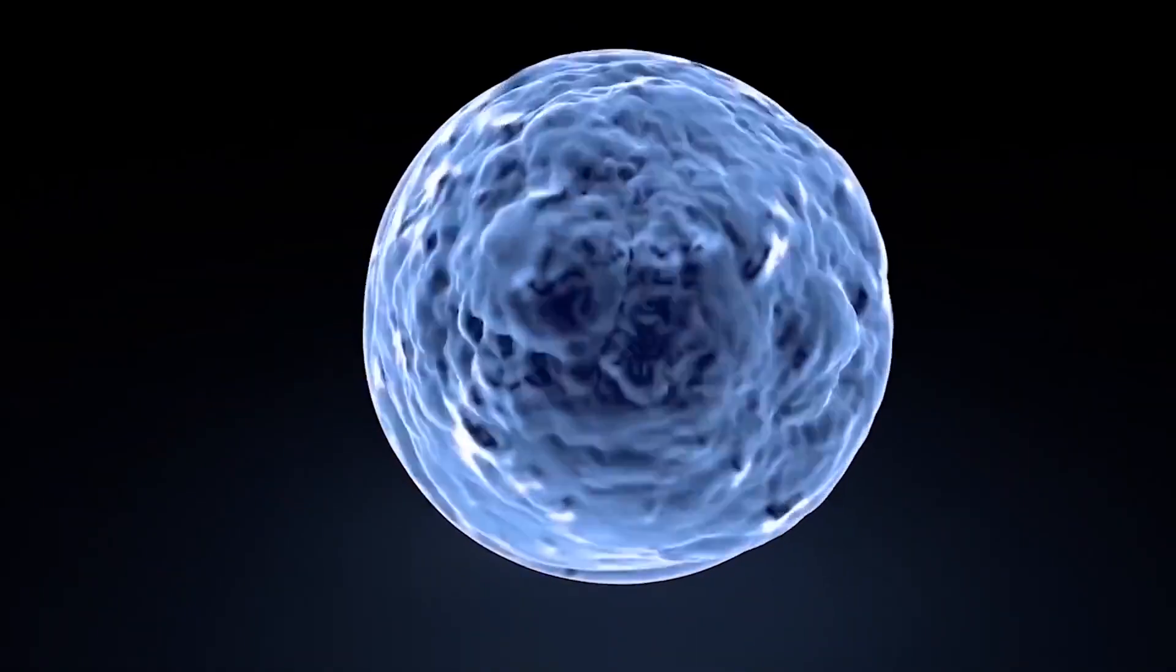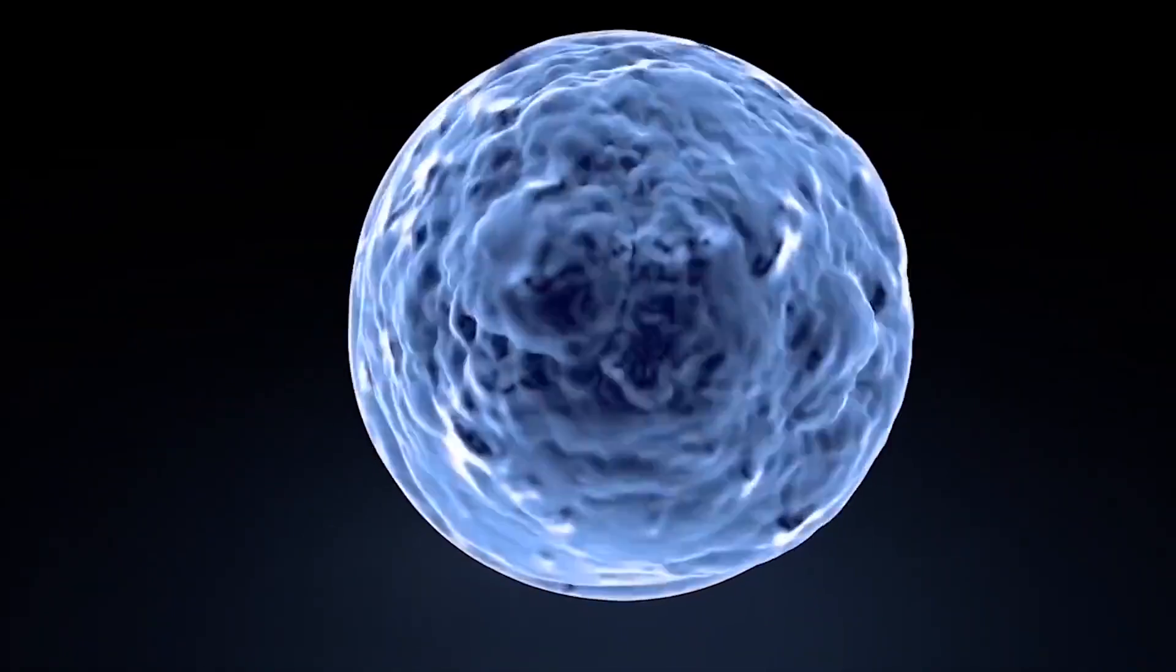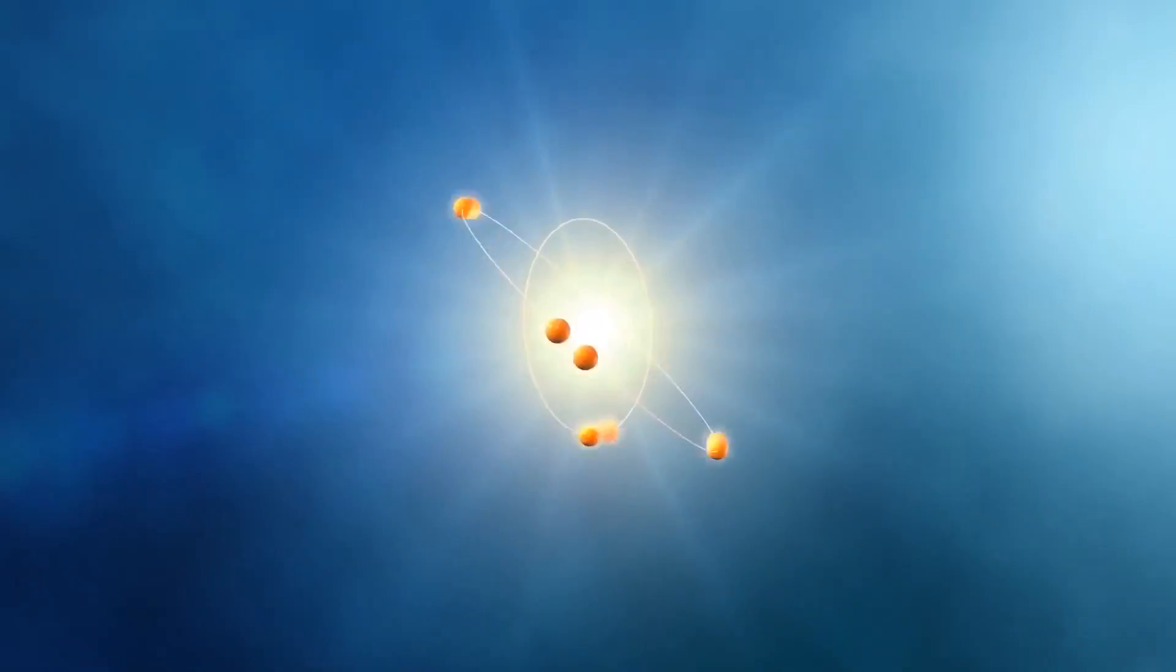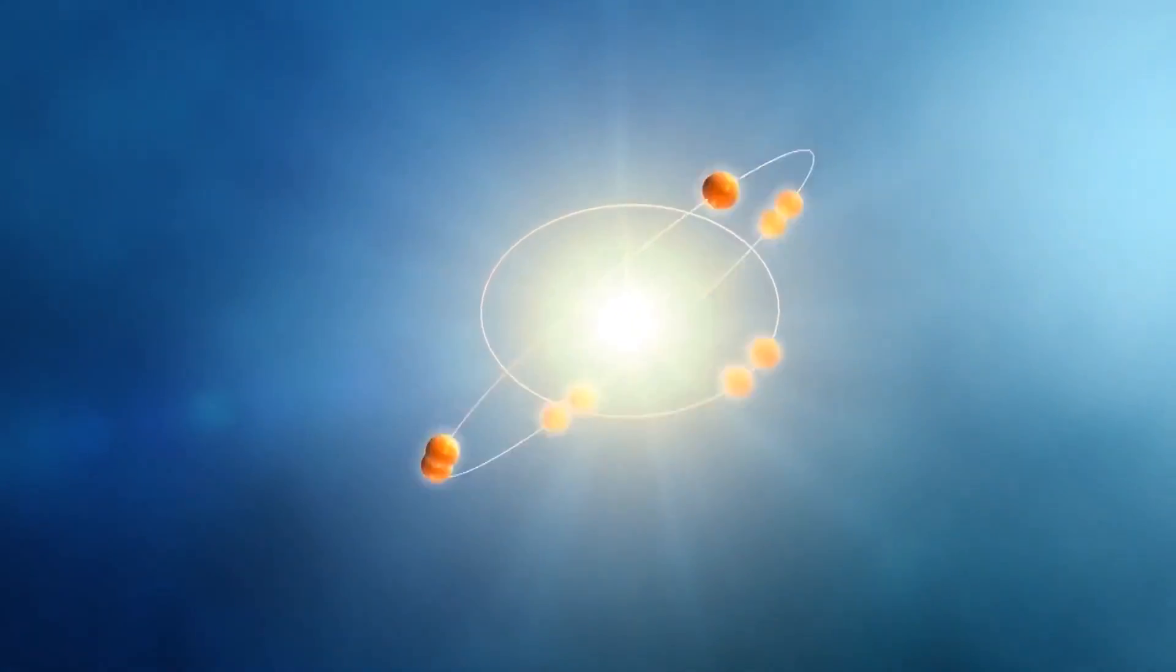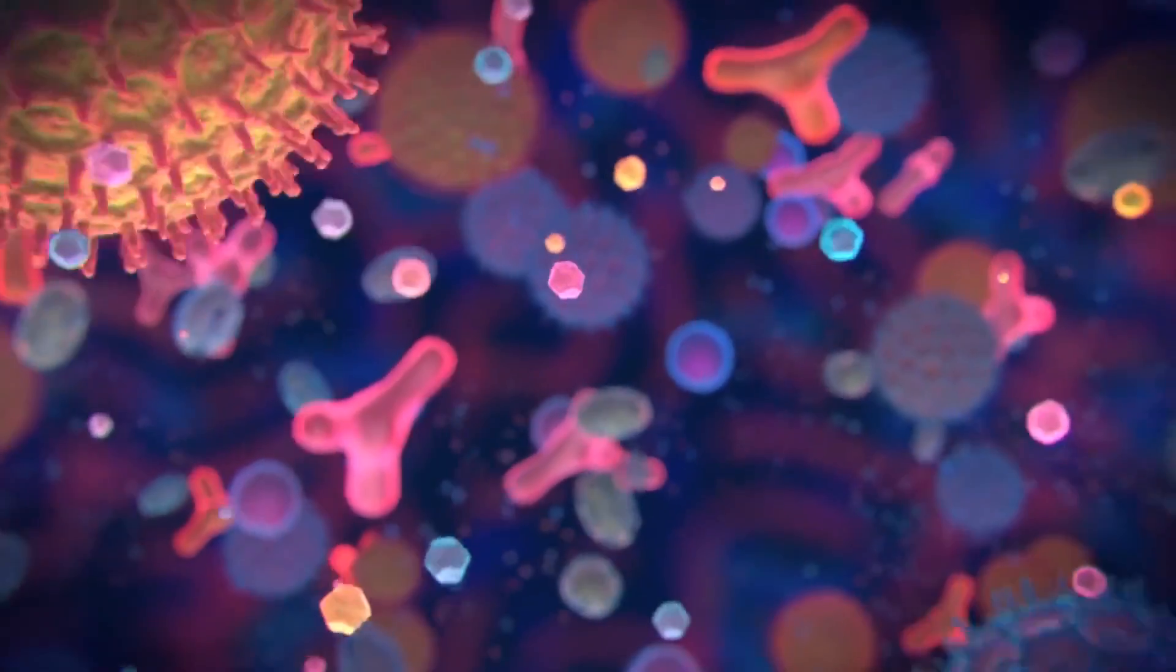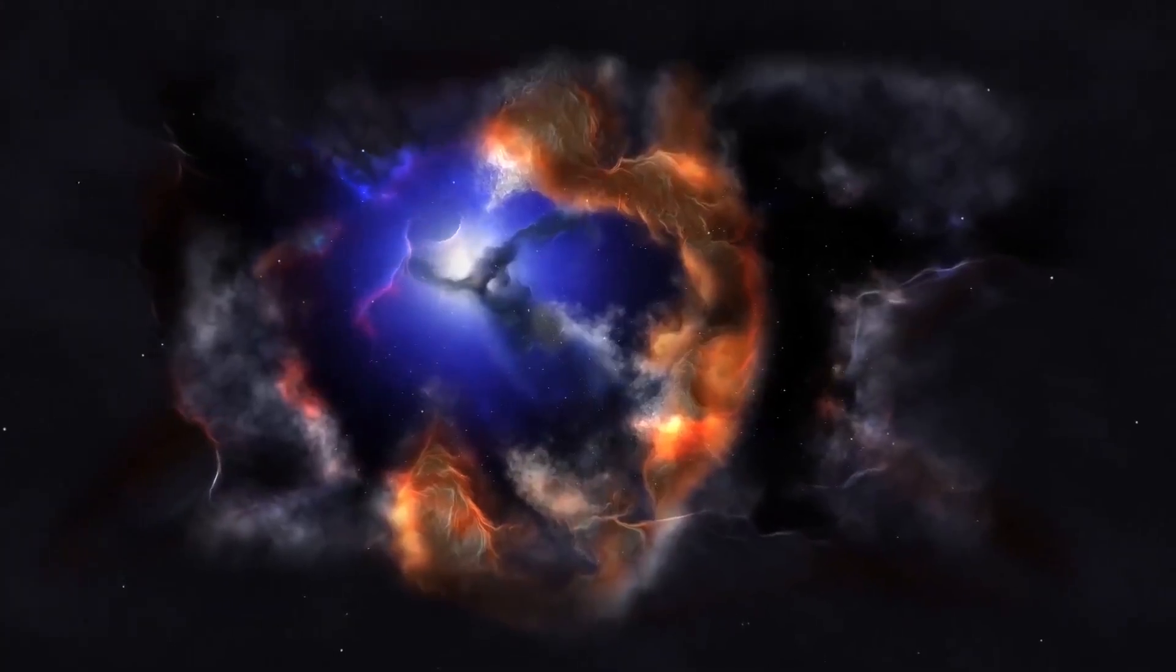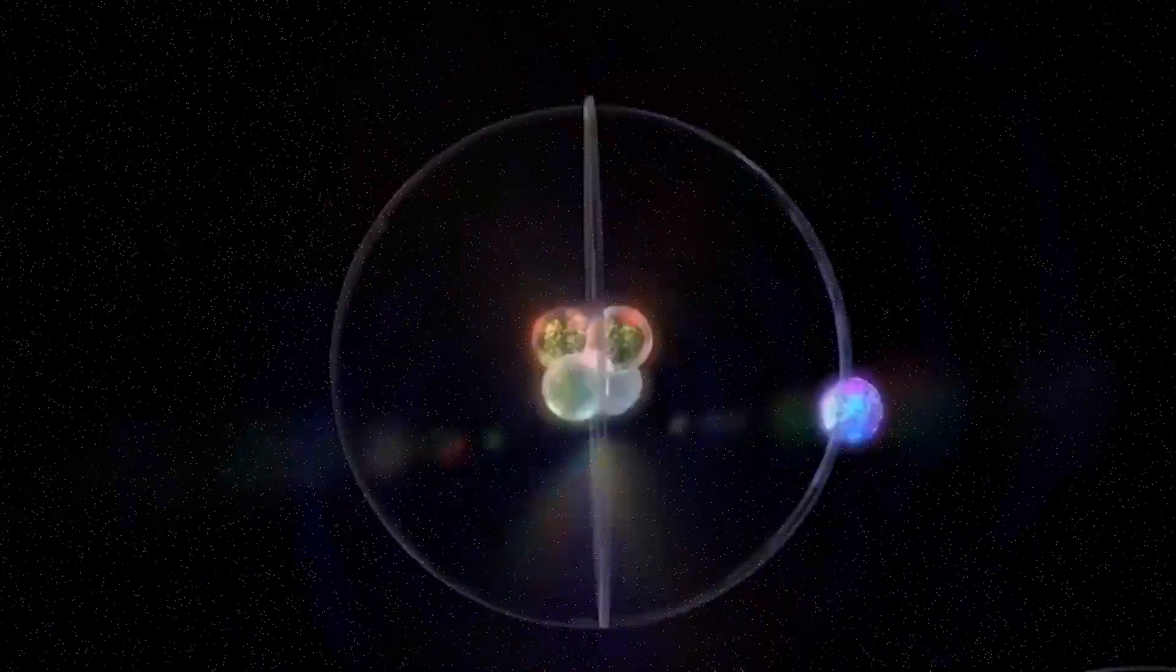The hypothesis says that actually all the same electron moves in space and time so quickly that it seems to us that there are a great many of them. Just one particle gives shape to everything that we consider to be the whole universe. How about that?